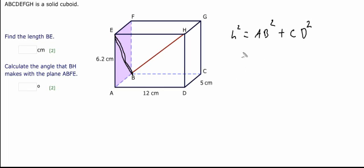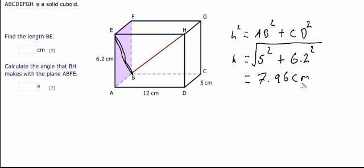So let's fill in. H equals AB is 5 squared plus CD is 6.2 squared. Now to get H on its own, we need to square root the answer that we get. If we do this in our calculator, we will get an answer of 7.96 centimeters. And that's that part of the question done.